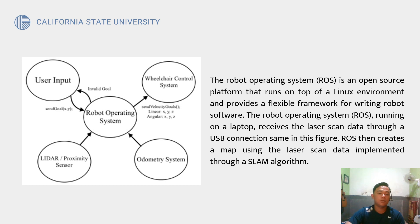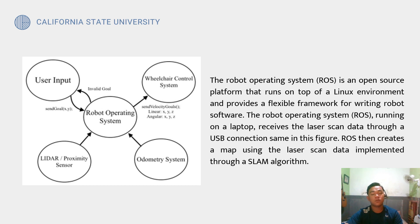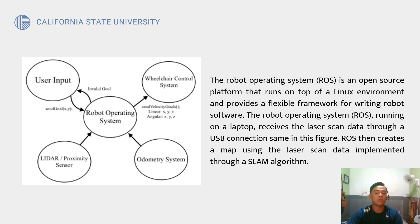The Robot Operating System (ROS) is an open-source platform that runs on top of a Linux environment and provides a flexible framework for writing robot software. ROS, running on a laptop, receives laser scan data through a USB connection, as shown in the figure. ROS then creates a map using the laser scan data implemented through a SLAM algorithm.